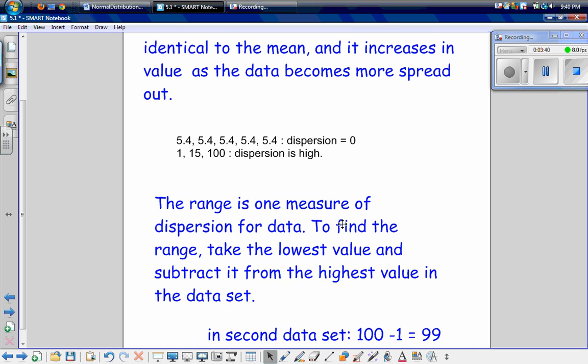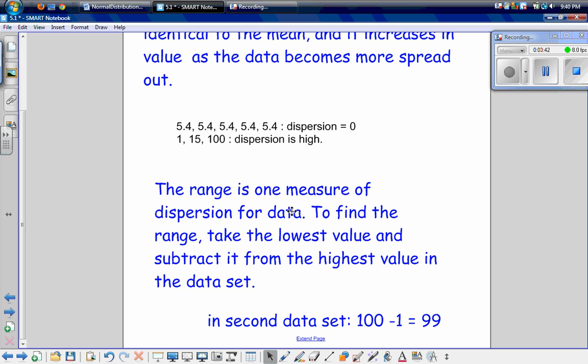Range is one measure of dispersion for data. To find the range, take the lowest value and subtract it from the highest value in the data set. In our second example here, we have 100 minus 1 gives us 99 for our range. So for this first example, then, our range would be zero because 5.4 minus 5.4 equals zero.